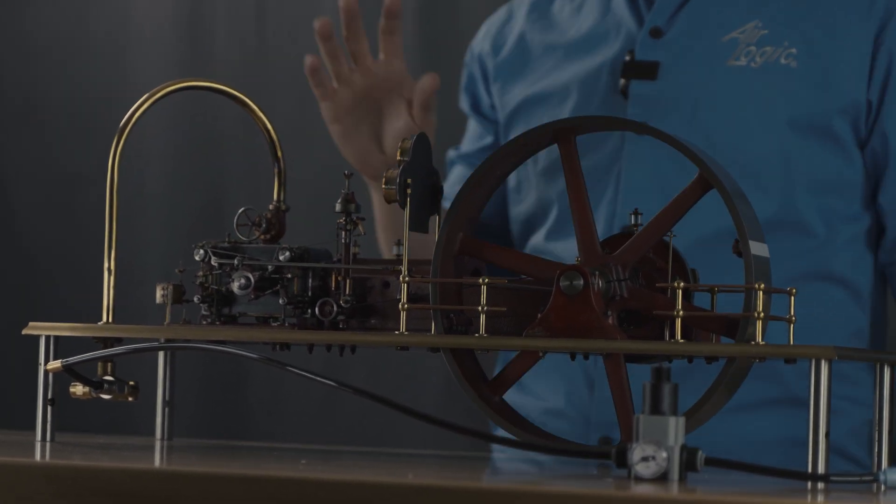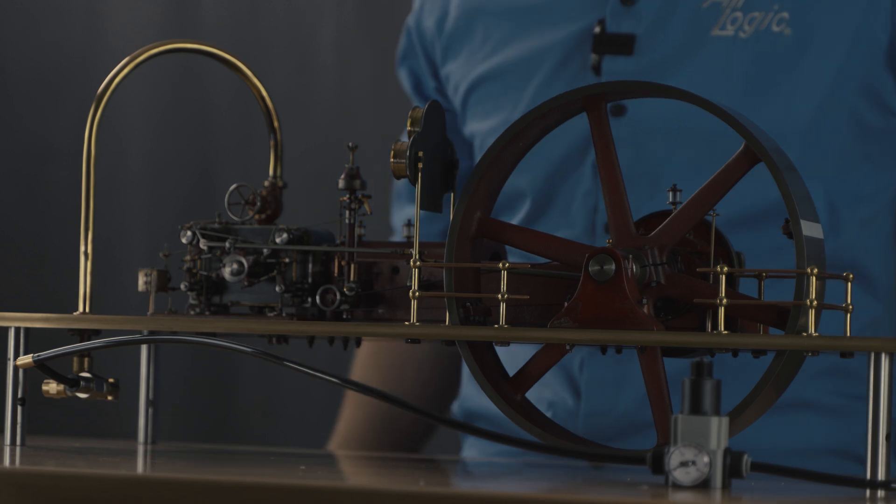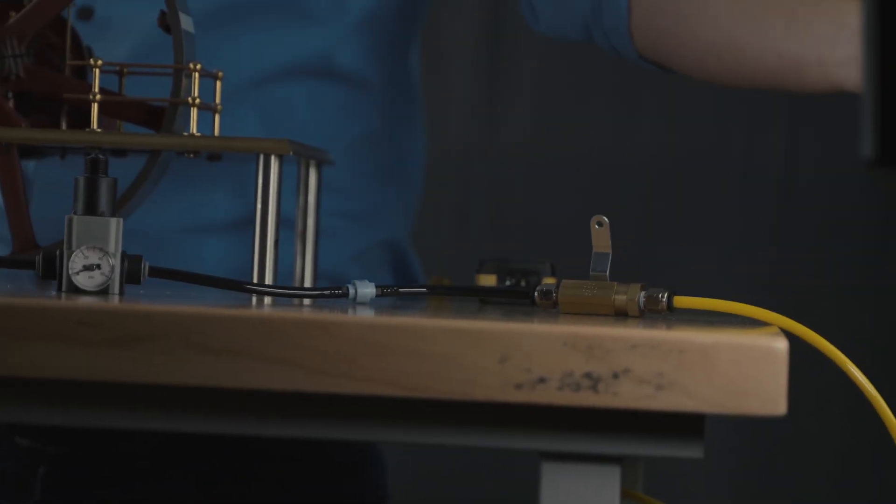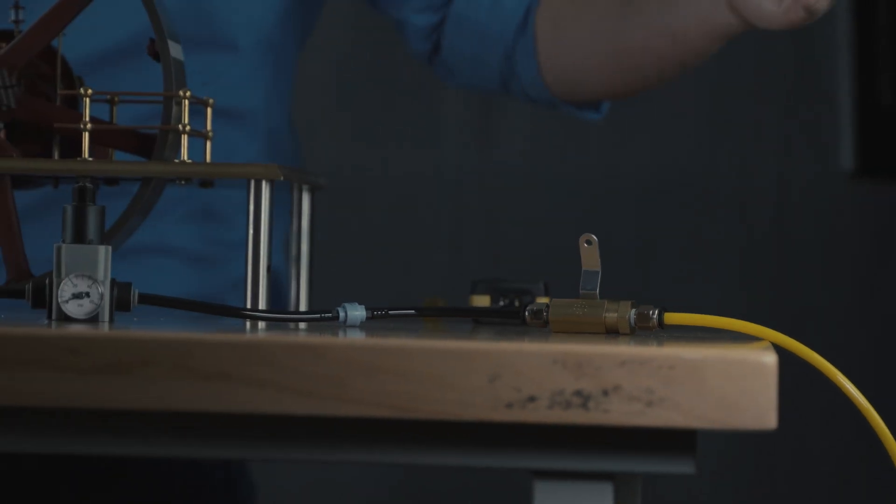If I do a quick overview of our system, coming in on the yellow line here we have our shop air. This is at 120 psi at our shop. Of course, an on-off valve.